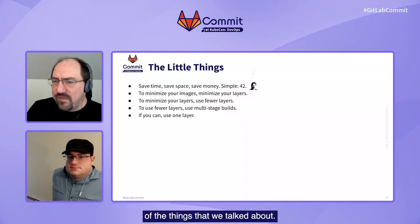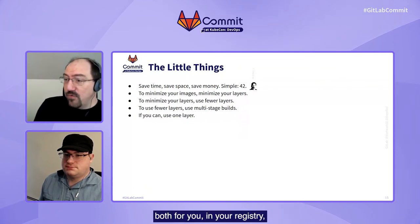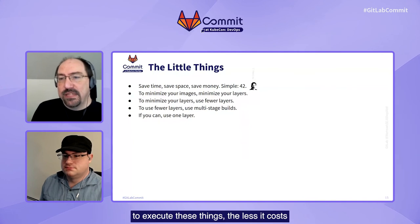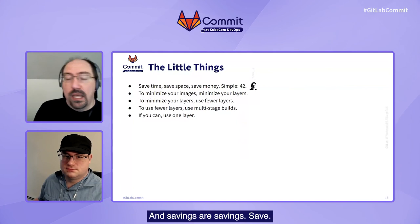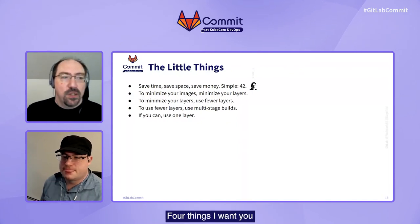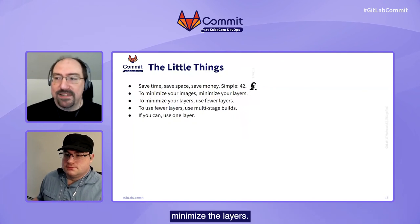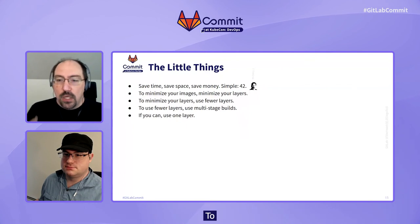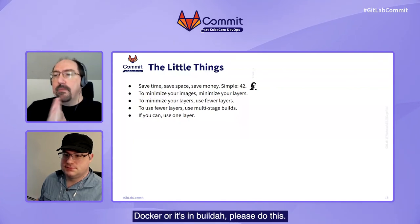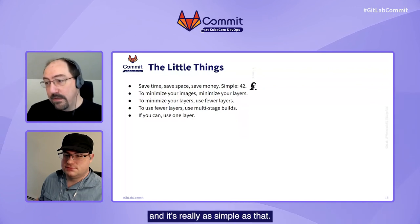So, let's give you a quick summary of the things that we've talked about. First off, save time — both for you and for your consumers. Save space, both for you in your registry and in your storage costs, but also for your consumer, because the less they have to have transferred to where they're trying to execute these things, the less it costs them too, both in time and transit. And savings are savings — save money. So, simple answer is 42. Four things I want you to understand in two ways: first, to minimize your images, minimize the layers. To minimize your layers, use fewer. To use fewer, make sure if you're using more than one layer you use multi-stage builds — whether it's in Docker or in Buildah, please do this. Second and final: if you can, use one layer. And it's really as simple as that.